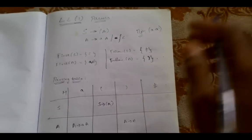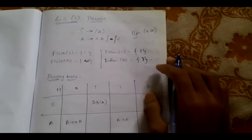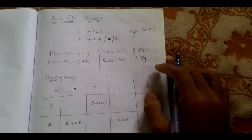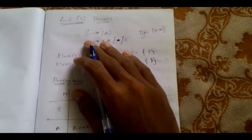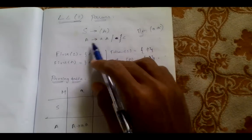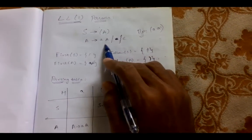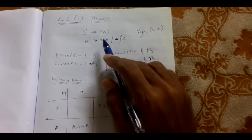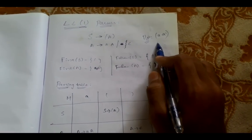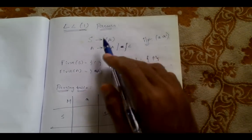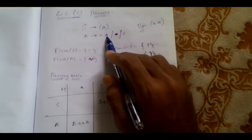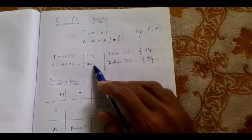Now we will be looking at the parsing techniques, starting with the LL1 parsing technique. For this parsing technique, we will be given a grammar — a set of productions — and for this grammar we need to check whether the given input is accepted or not.